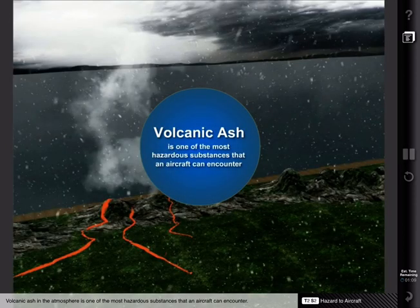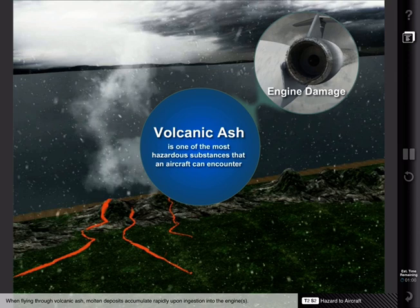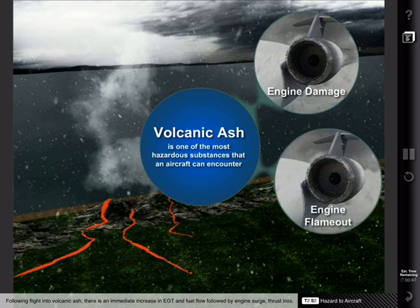Volcanic ash in the atmosphere is one of the most hazardous substances that an aircraft can encounter. When flying through volcanic ash, molten deposits accumulate rapidly upon ingestion into the engine. This causes rapid erosion and damage to the internal engine components. Following flight into volcanic ash, there is an immediate increase in EGT and fuel flow, followed by engine surge, thrust loss, and possible engine flame-out.